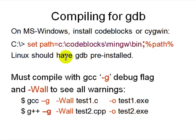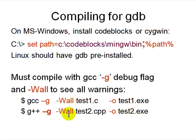In Linux, GDB should be pre-installed. When you compile your code, make sure you use the gcc -g flag for debug info — so you say gcc -g or g++ -g. The -Wall flag means all warnings. Use warnings because a lot of times half the mistakes can be fixed just by looking at the warnings before even starting to debug your code.